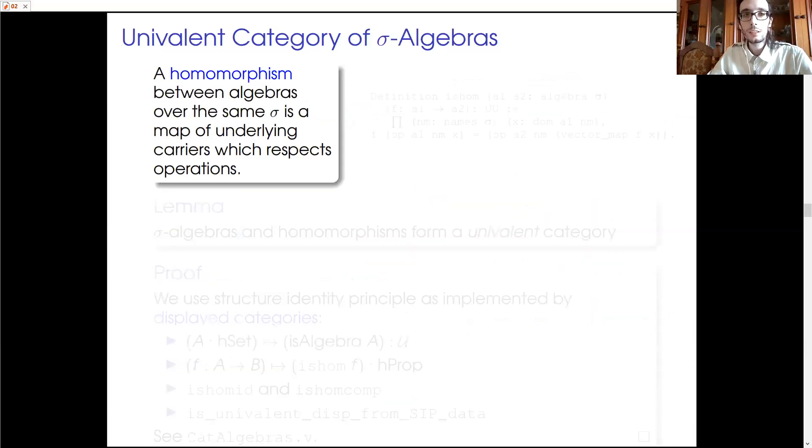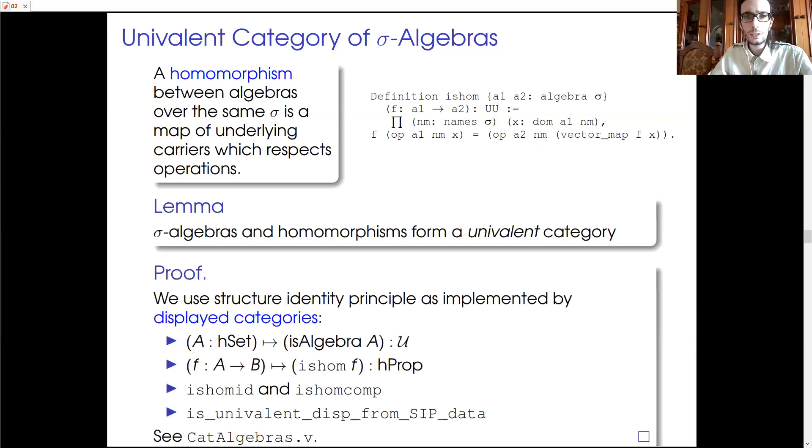Now, having algebras, we can also define homomorphisms between algebras, which are just set functions that preserve the operations. And here you see the type we define in UniMath. And now, since we have objects and arrows, we can easily construct a univalent category of σ-algebras because we use the structure identity principle as it is implemented by displayed categories. So, we associate to each set the property of being an algebra, to each set function the property of being a homomorphism on algebra, and we prove that this lives in hProp.